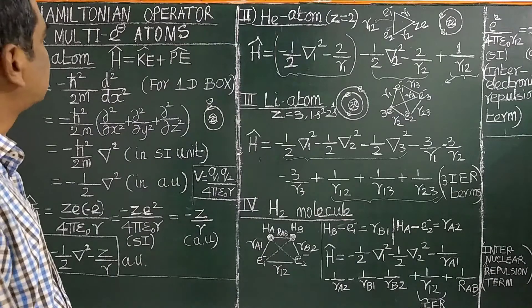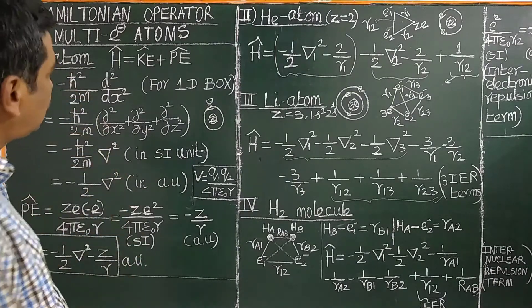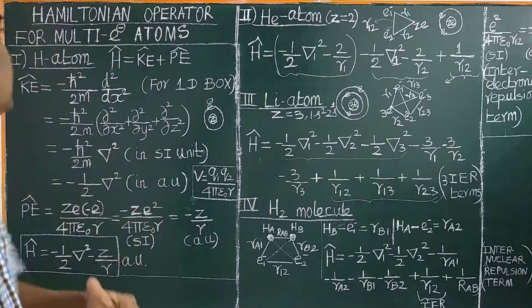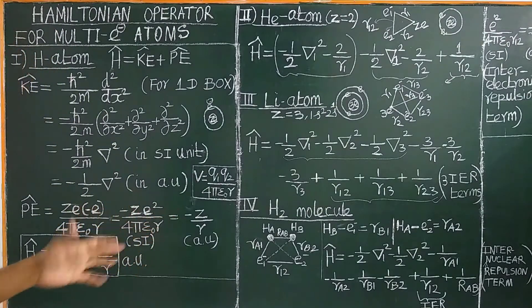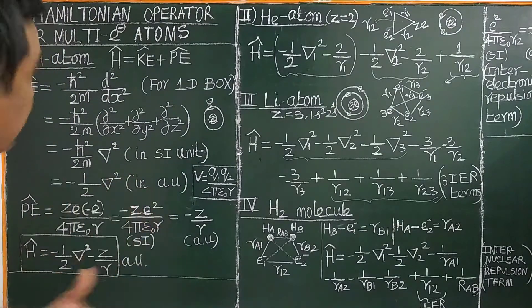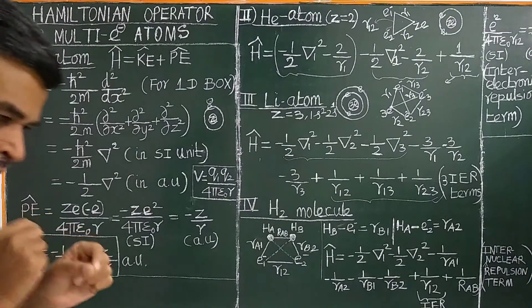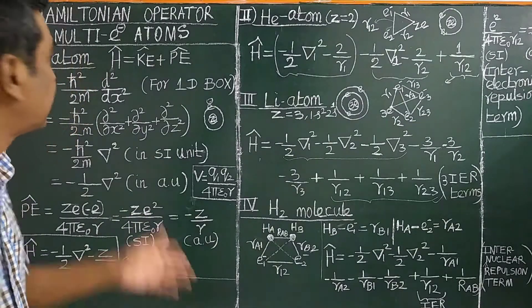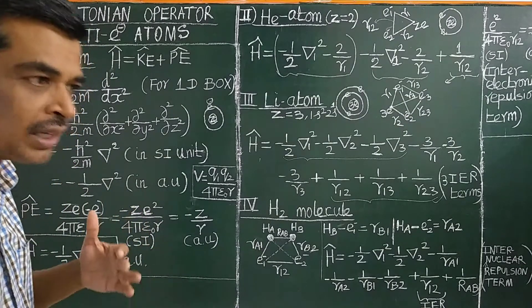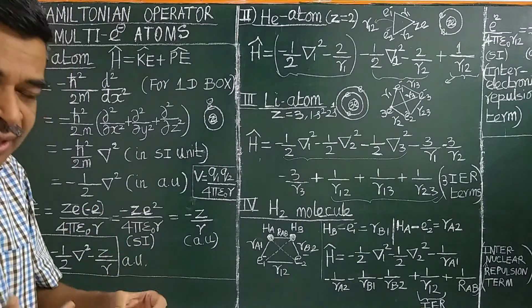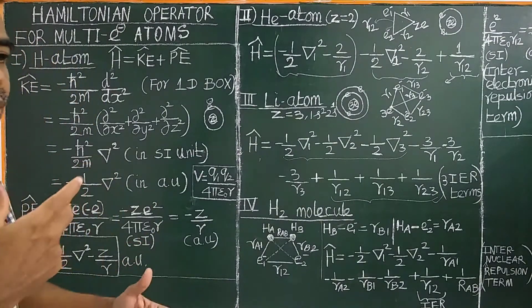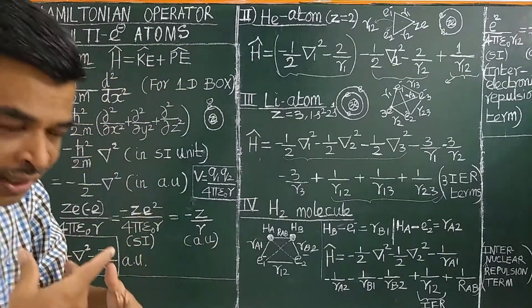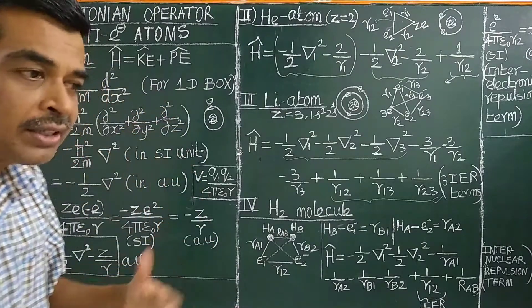Good morning. In this class, we will study how to write or how to construct the Hamiltonian operator of poly-electron atoms, multi-electron atoms, or many-electron atoms or molecules. Once you write the Hamiltonian operator, by using the Schrödinger wave equation H-psi equals E-psi, we can obtain the energies, energy levels, and also the wave functions. The wave functions obtained by solving the Schrödinger wave equation are called atomic orbitals.